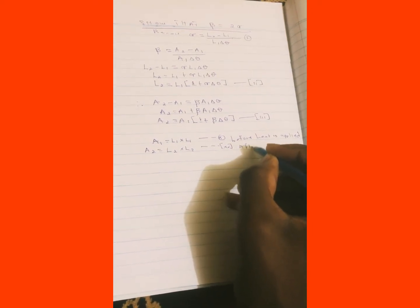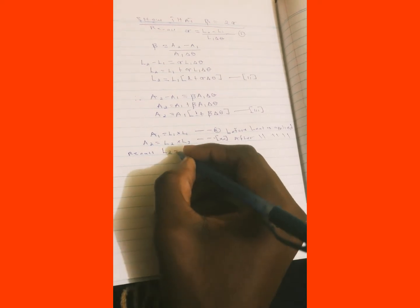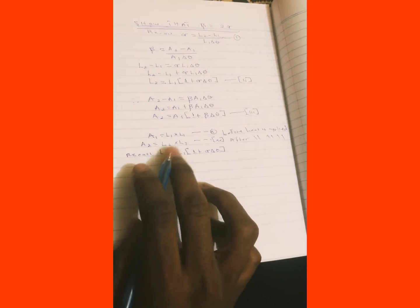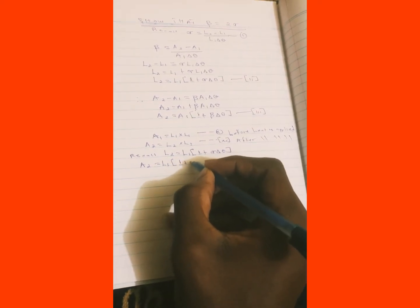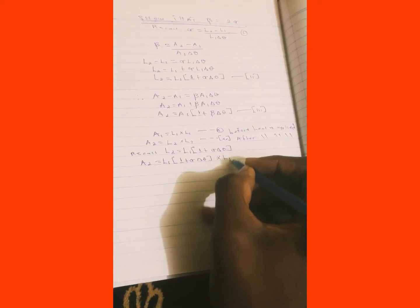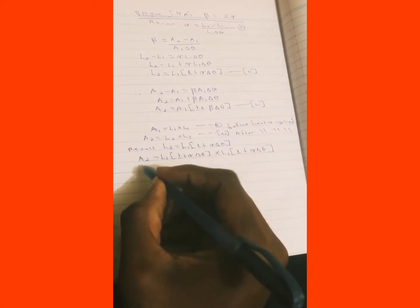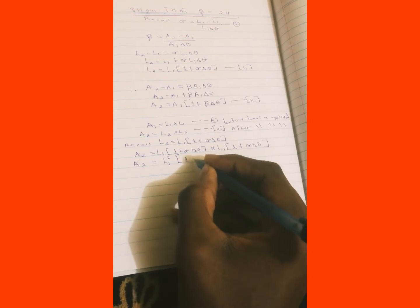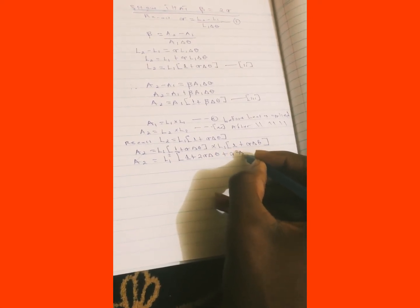After heat is applied, recall that L2 is the same as L1 times the quantity 1 plus alpha times the change in temperature. So when we multiply, we have A2 equal to L1 squared times the quantity 1 plus alpha times delta T, all squared, which gives A2 equal to L1 squared times the quantity 1 plus 2 alpha delta T plus alpha squared delta T squared.